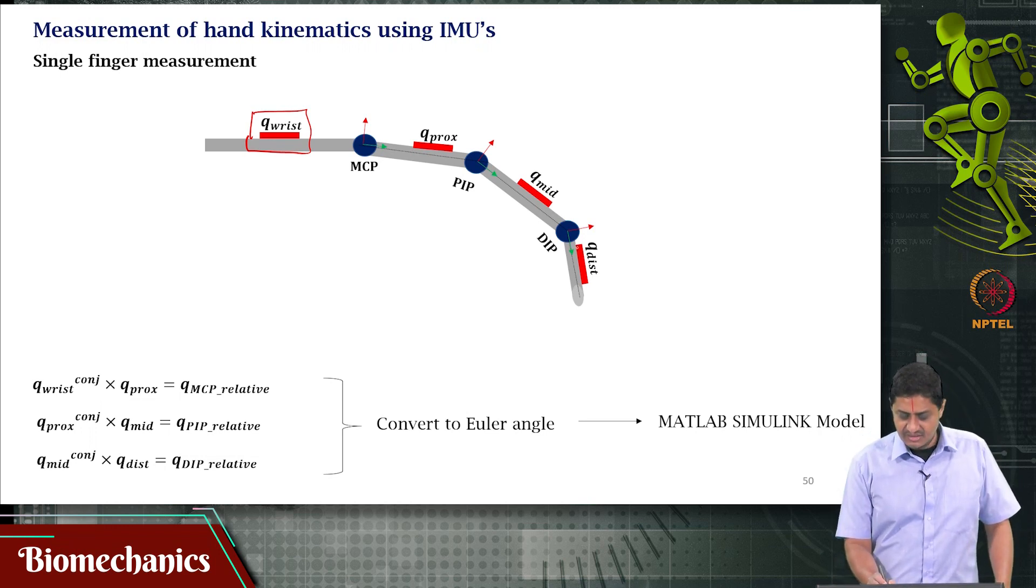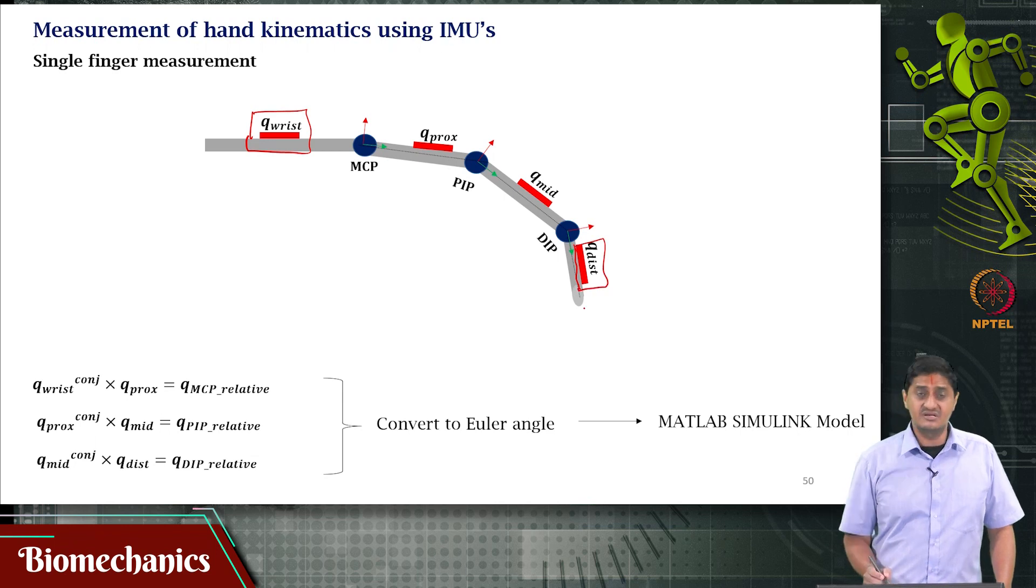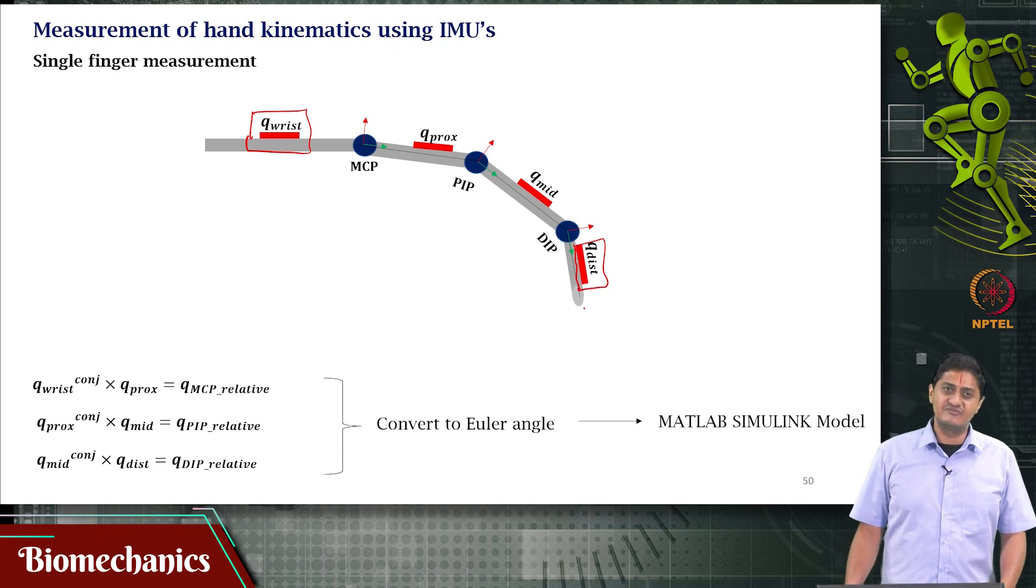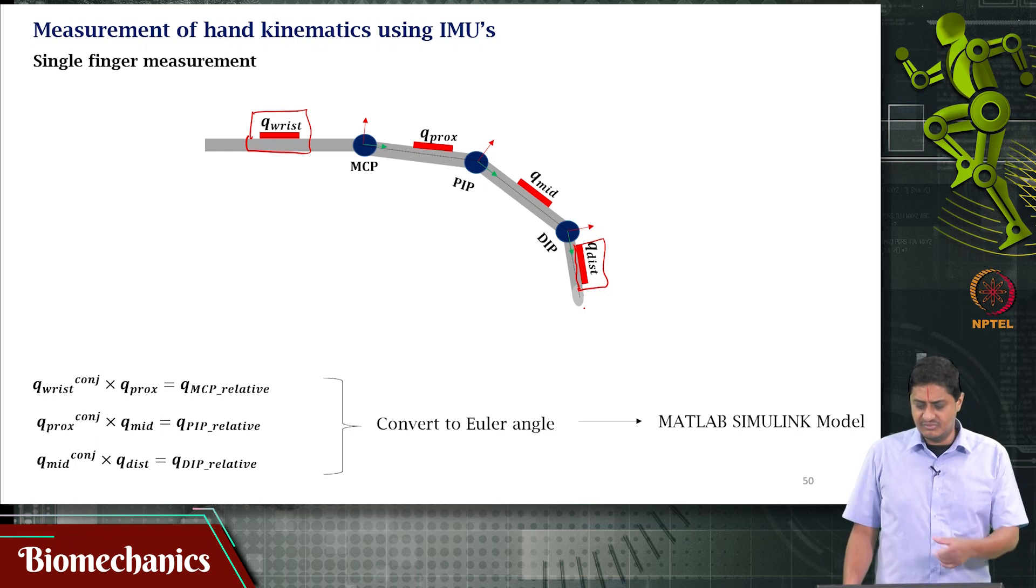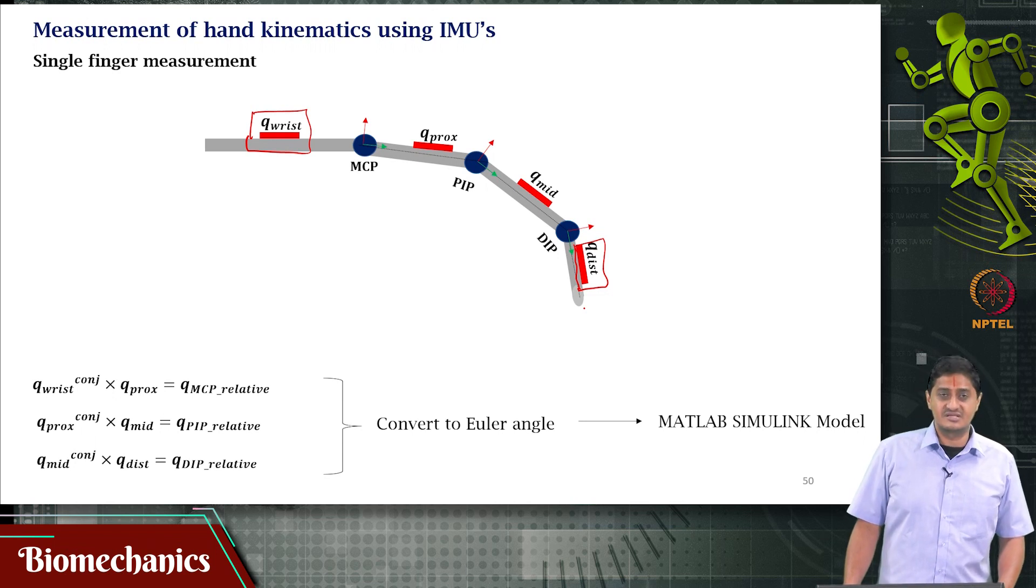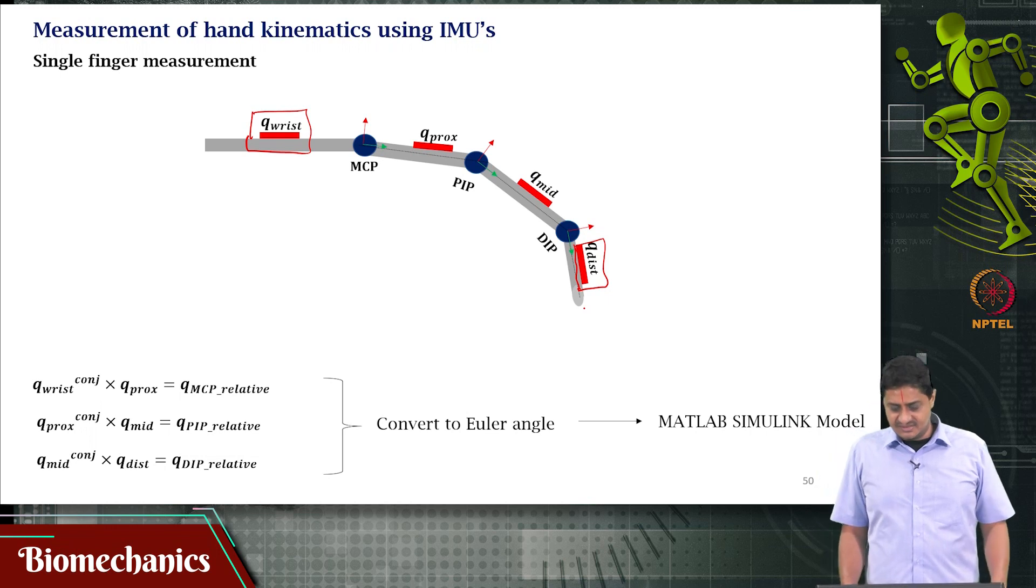Because I'm interested in fingertip kinematics and I have only 2 IMUs to start with, I'm placing the second IMU at the distal segment, at the distal phalanx. If I place it somewhere else, I will miss the total kinematics of the distal phalanx. But the distal phalanx will also include excursions that happen at the previous joints, although I do not know what these excursions are.